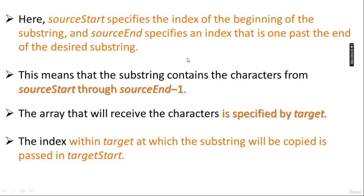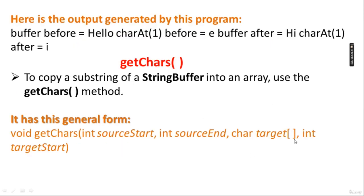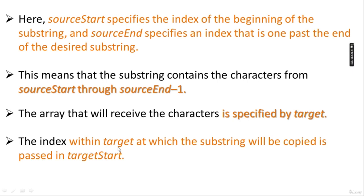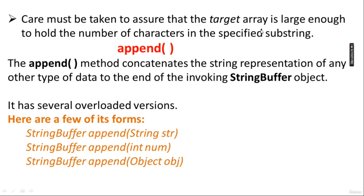sourceStart specifies the index of the beginning of the substring, and sourceEnd specifies the index one past the end of the desired substring. This means the substring contains characters from sourceStart to sourceEnd minus one. The array that receives the characters is specified by target, and targetStart specifies where in the target to place the characters. Care must be taken to ensure the target array is large enough to hold the number of characters in the specified substring.